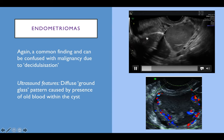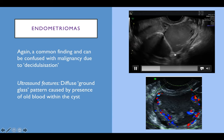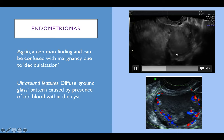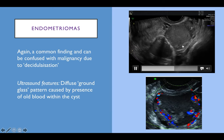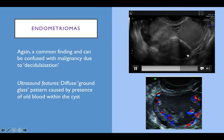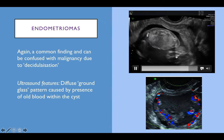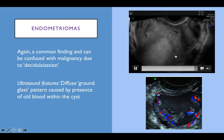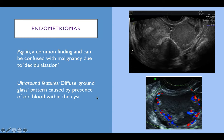In this video we can see the endometrioma — a multilocular cyst with multiple locules and ground-glass contents. Here is the baby, at about 14 or 15 weeks. This endometrioma actually moved quite well and the patient was asymptomatic.